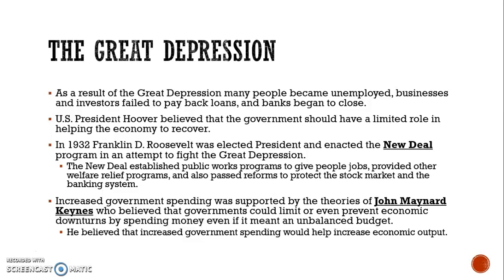President Hoover believed the government should have a limited role in helping the economy recover, so he didn't provide money to those who were struggling, and people didn't want him as president anymore. In 1932, Franklin D. Roosevelt — FDR — was elected president and enacted the New Deal to fight the Great Depression. The New Deal established public works programs to give people jobs, provided welfare relief programs such as Medicare, Medicaid, and Social Security, and passed reforms to protect the stock market and banking systems — many of which we still use today. This increased government spending was supported by economist John Maynard Keynes, who believed the government could limit economic downturns by spending money, even if it meant an unbalanced budget, because increased government spending would help increase economic output.